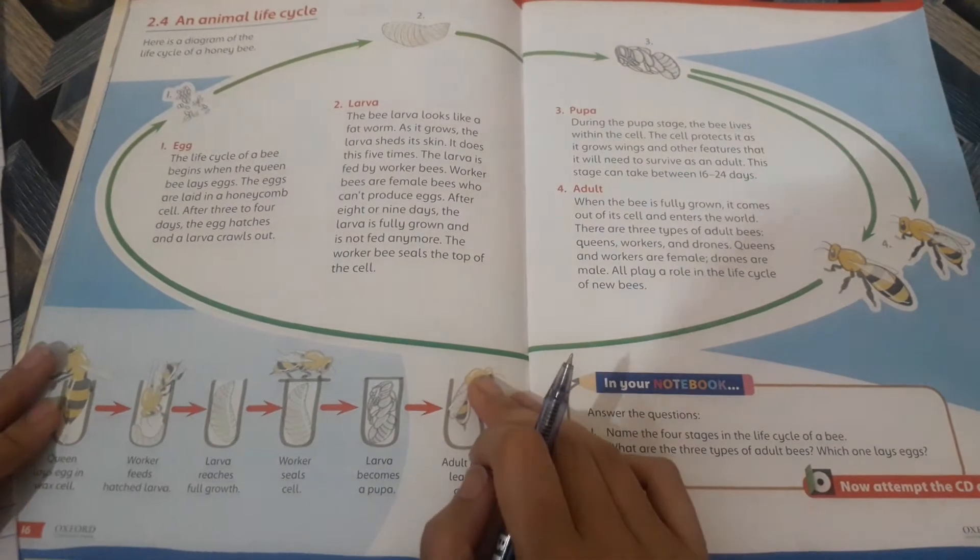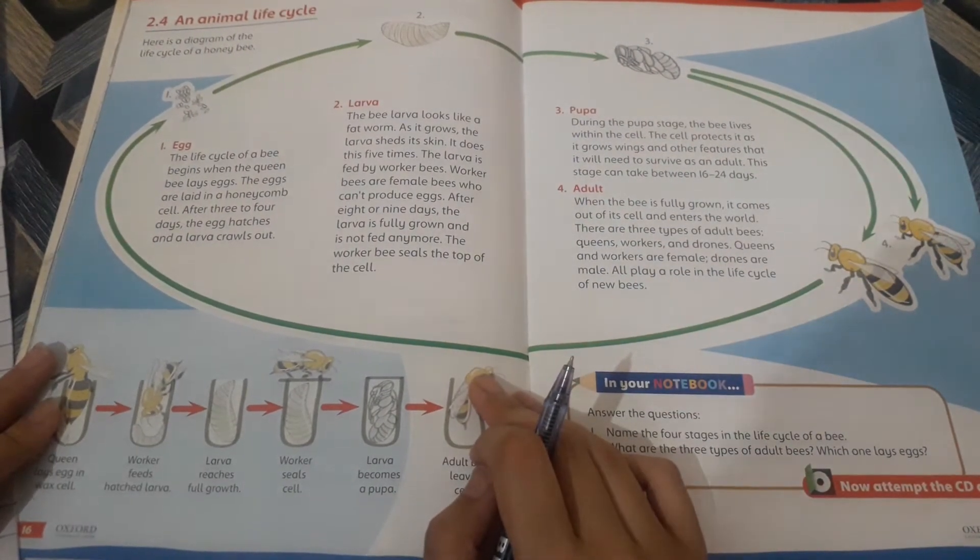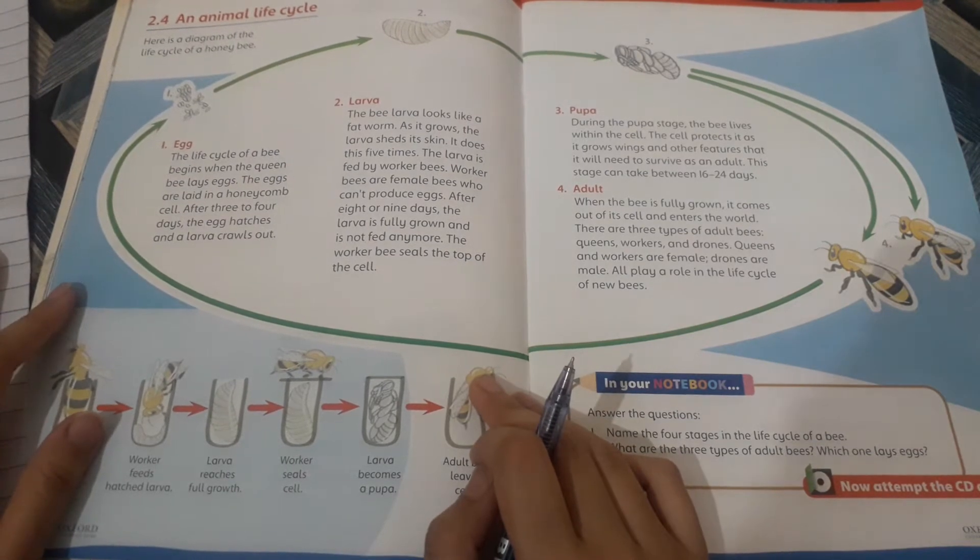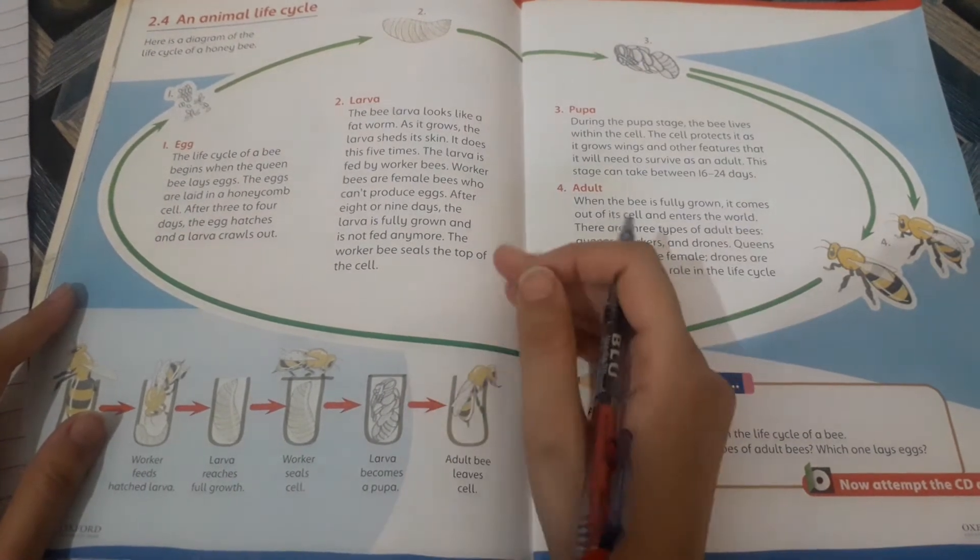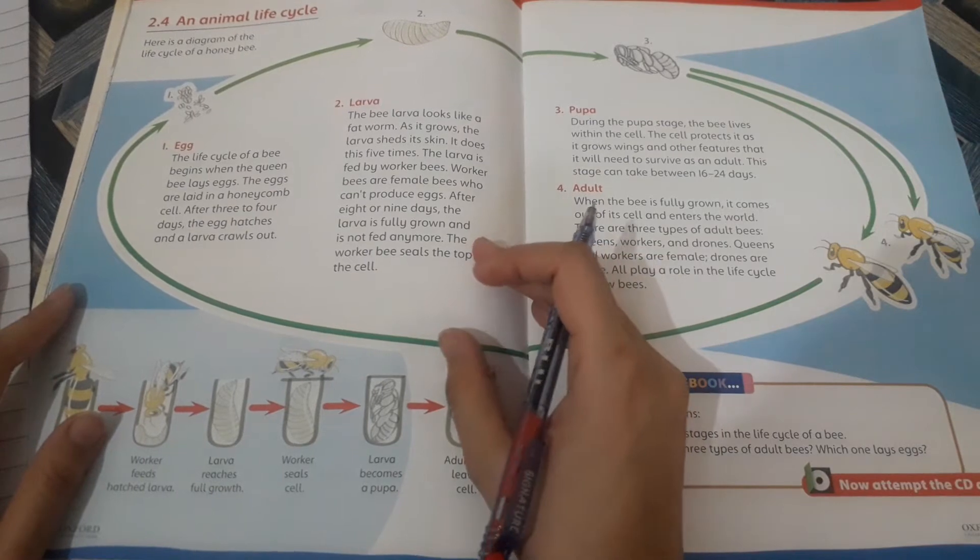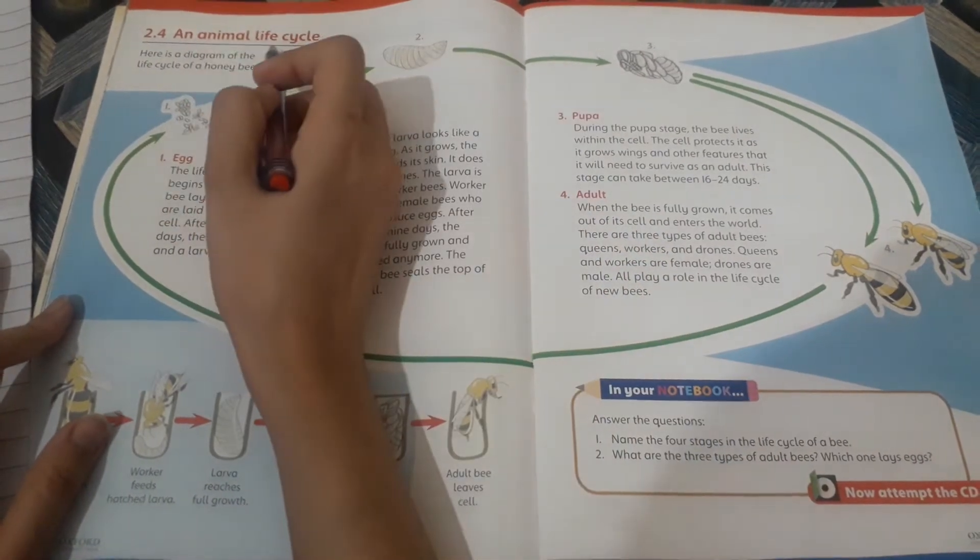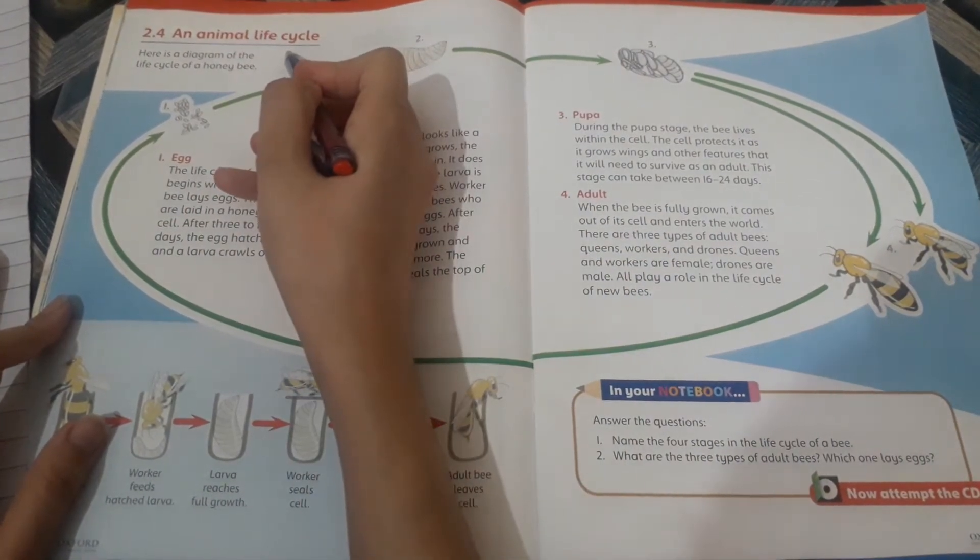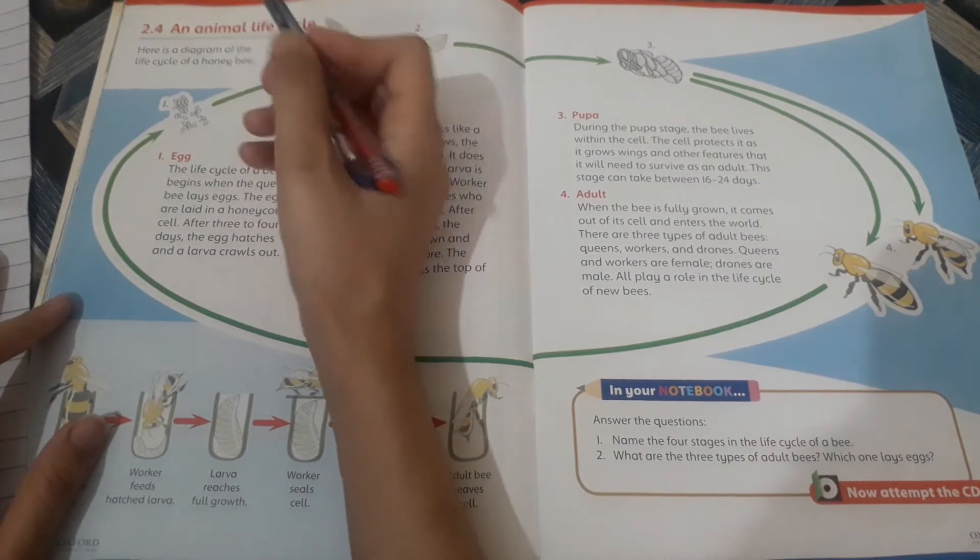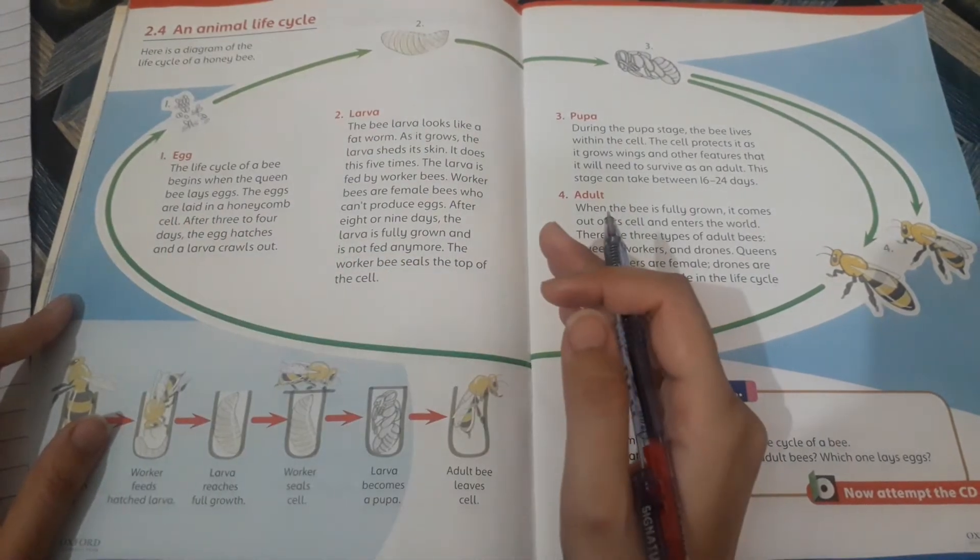Assalamu alaikum, class three. Today's lecture is really interesting. It is also the last lecture of unit number two. The lecture is about the animal's life cycle. I have told you every living thing has a life cycle.